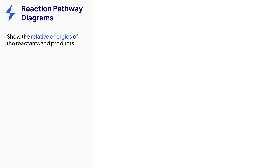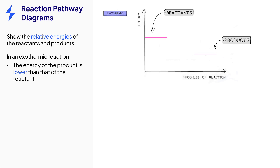Reaction pathway diagrams can be used to show the relative energies of the reactants and the products. In an exothermic reaction, energy is given out to the surroundings, so the energy of the products will be lower than that of the reactants. The initial rise in energy represents the activation energy, which is the minimum energy needed for the reaction to start, and the difference in energy between the reactants and products is the overall energy change. The direction of the arrow goes down, showing that energy has been released.